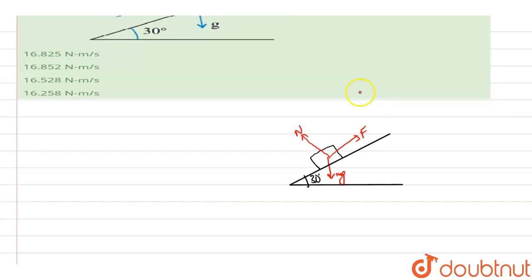This force will be equal to all the downward forces. One will be the force of friction and another will be the component of mg, that is mg sin theta. So the force F equals the force of friction plus mg sin theta.